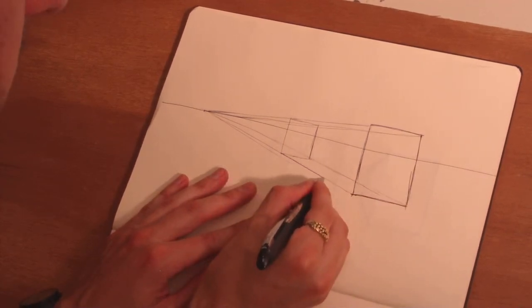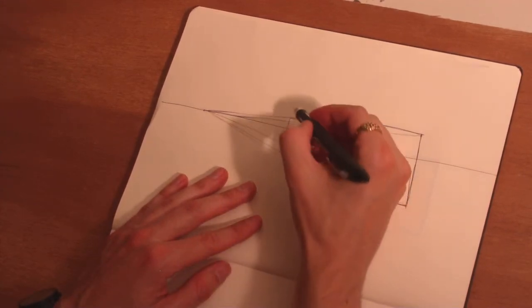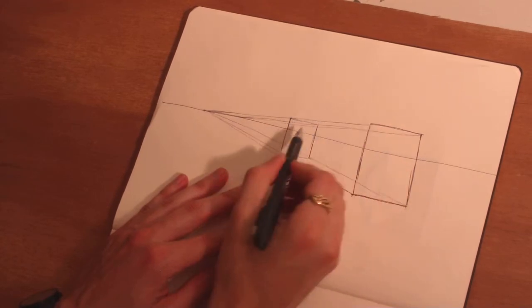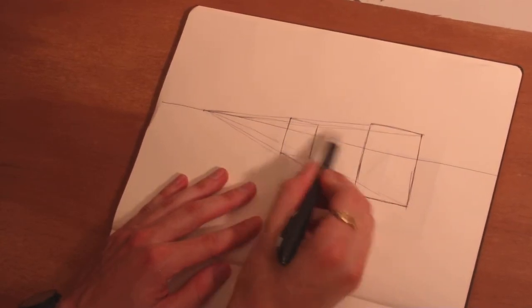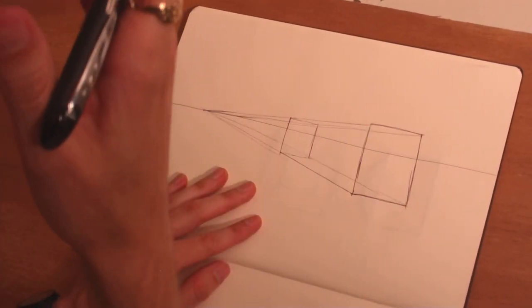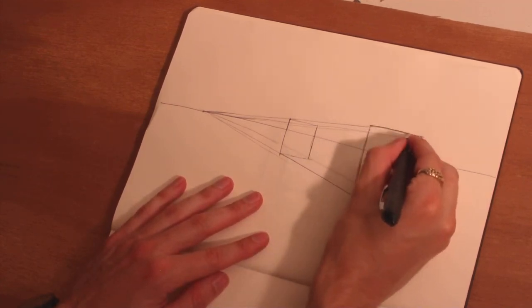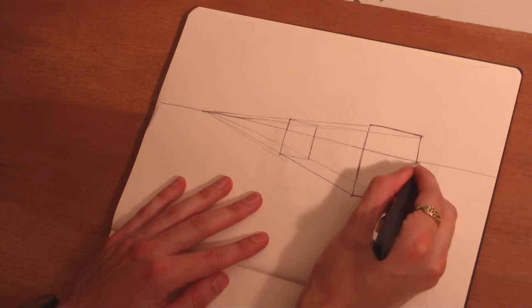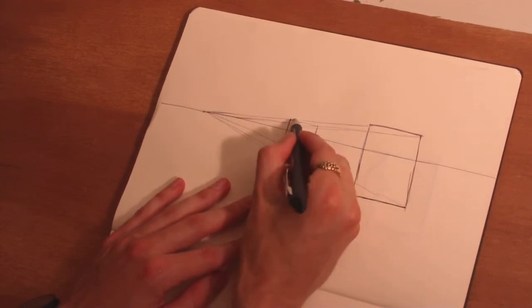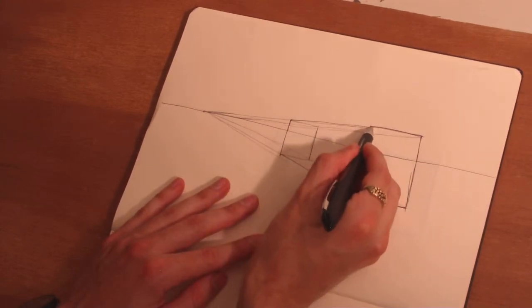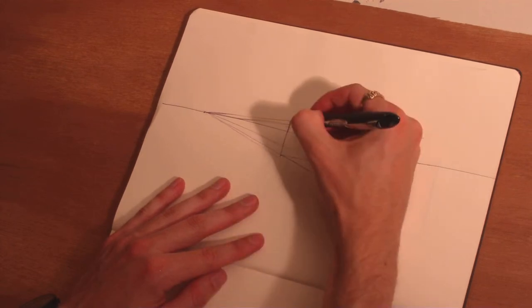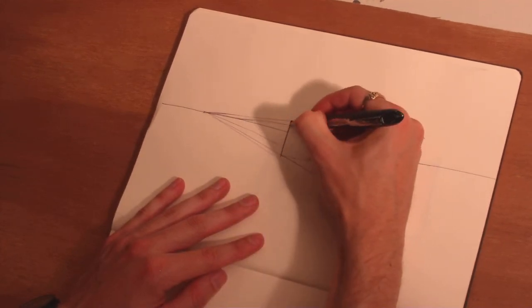But I don't know if you've noticed this, but these front and back planes start to look a little strange because these lines are still paralleling the horizon line. So that kind of creates a distortion in our solid. This is a distortion that you can take advantage of if you'd like.